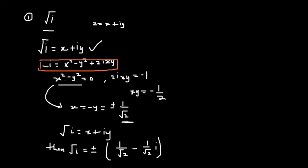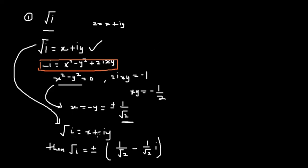From here, we know that root of i equals x + iy. We know that x² minus y² gives us zero, and 2ixy gives us negative one over two. When we simplify this, we get plus or minus 1 over root 2. So back from here: this is how you prove root of i. Root of i equals x + iy.